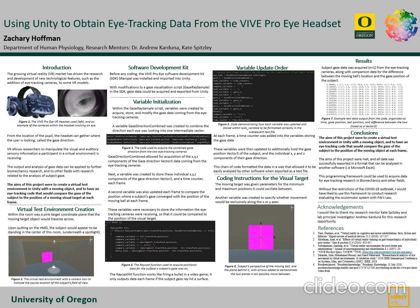I created a new variable called gaze direction combined, which combined both of the gaze direction vectors coming from each eye into one intermediate vector. This gaze direction combined variable gave me the opportunity to acquire both the x, y, and z components of the gaze direction Vector3.